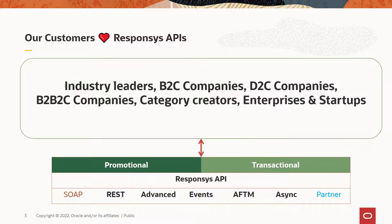Our customers love Responses APIs and use them for promotional and transactional purposes. The different types of Responses API are SOAP, REST, ADVANCE, EVENTS, AFTM, ASYNC, and Partner API.